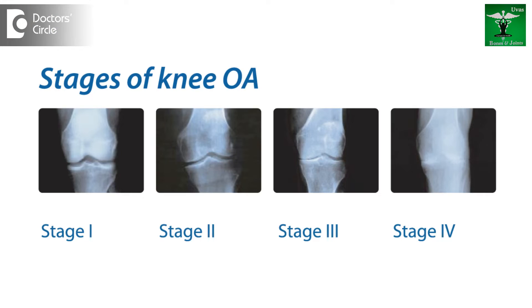For the sake of uniformity of treatment of diseases, there are certain protocols laid down by the Councils of Medical Science, which help in planning our treatment line depending upon the stages of the diseases. Similarly, Osteoarthritis has been differentiated from Grade 1 to Grade 4, and depending on the type and stage of the disease, we initiate the treatment.